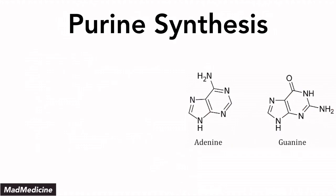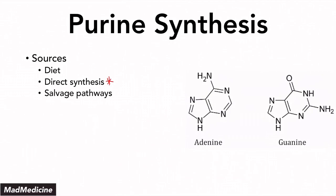Purine synthesis is very important — it's a source of confusion for many people and it is difficult — but also because there are many diseases and medications you need to know that are very high yield. When it comes to sources, you can derive purines from your diet, but there are two main pathways: the direct synthesis pathway, which we're discussing today, and the salvage pathway, where you salvage purines from the remnants or breakdown products of DNA.